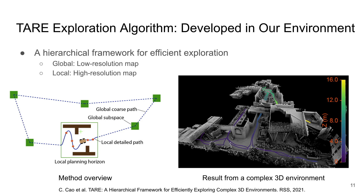Here we showcase the Tier Exploration Planner developed in our environment. The planner adopts a hierarchical framework to separate the planning process into two levels for efficient exploration. At the global level, the planner uses a low-resolution map to trade off the processing of details for fast computation. At the local level, the planner uses a high-resolution map with detailed processing to ensure complete coverage of the local areas.